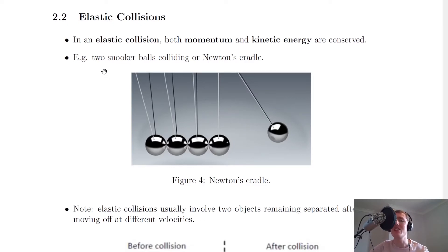And an example of an elastic collision is two snooker balls colliding, or for example, a Newton's cradle as shown in the picture here.